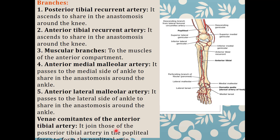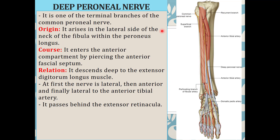The venae comitantes of the anterior tibial artery drain into the popliteal vein. These join the venae comitantes of the posterior tibial artery in the popliteal fossa to form the popliteal vein. Remember: the venae comitantes of the anterior tibial artery and posterior tibial artery join together and drain into the popliteal vein.